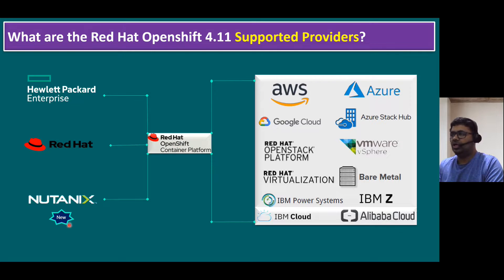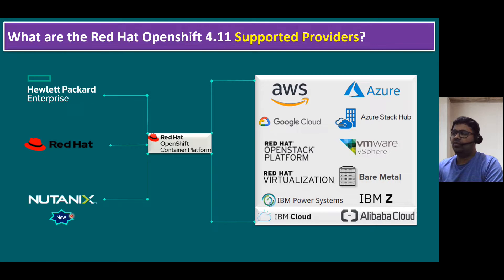Nutanix AHV support is a new addition — it was not available in versions 4.10 or 4.8. Red Hat recently announced support for Nutanix AHV environments. OpenShift versions previously went from 1, 2, 3, through 3.11, then 4.0 was released. The latest version of Red Hat OpenShift container platform is now 4.11.